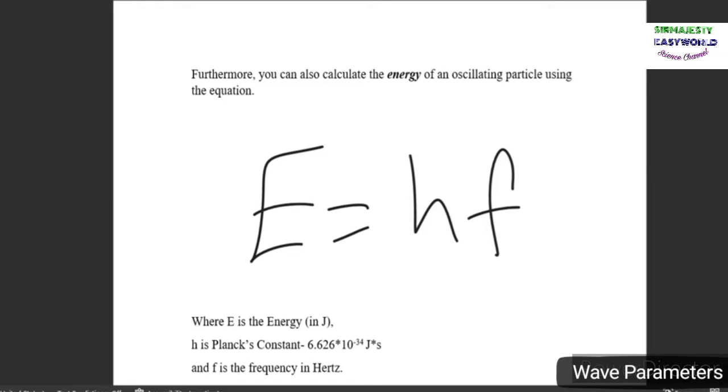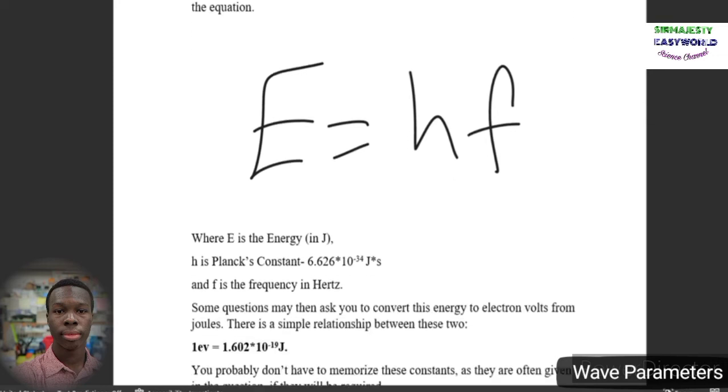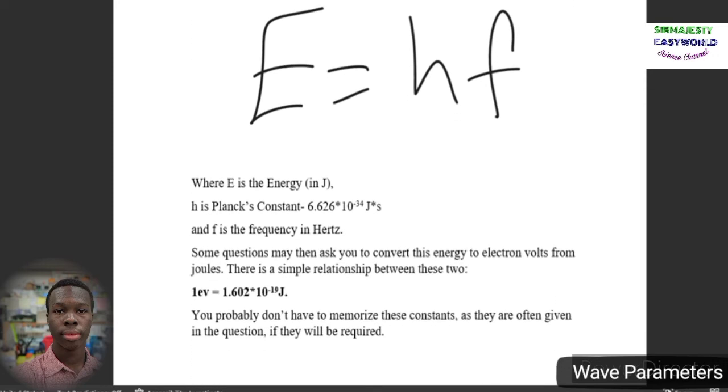If you're given the period instead of the frequency, you can always convert the period to frequency by finding its inverse. The unit of energy is in joules, but sometimes you may be asked to represent this energy in electron volts. There is a relationship between joules and electron volts. One electron volt is equal to 1.602 times 10 to the power of negative 19 joules, which is shown here.